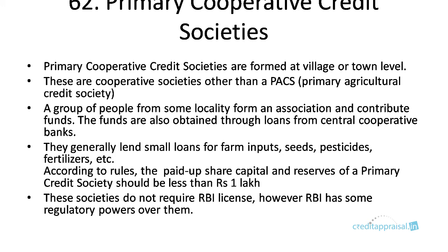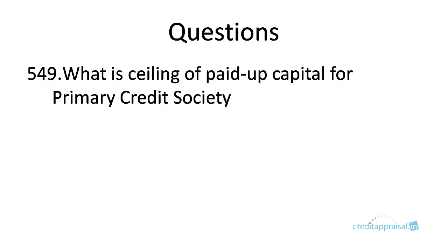This cooperative society is other than PACS. PACS is the Primary Agricultural Credit Society. A group of people from the same locality will form an association and contribute funds. These funds can also be obtained from central cooperative banks. They lend small loans for farm inputs, seeds, fertilizers, etc. The share capital will be less than 1 lakh. These societies do not require an RBI license, but RBI has some regulatory powers. The ceiling of paid-up capital for a primary credit society is 1 lakh.